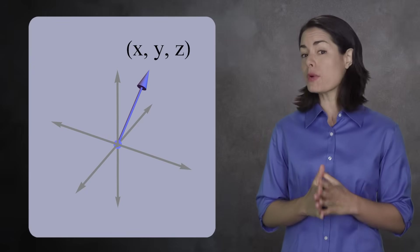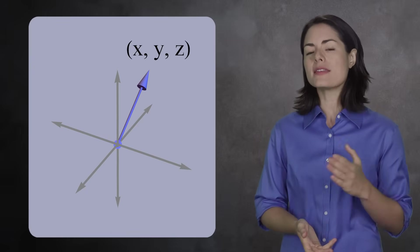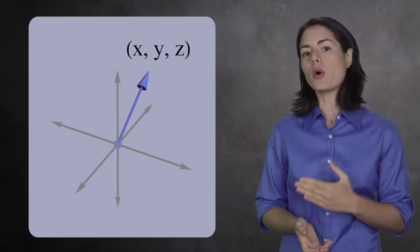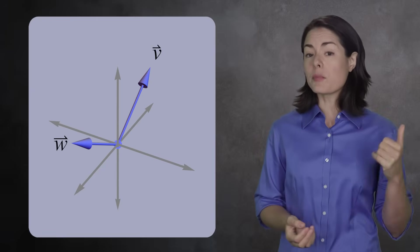Similarly, you can have vectors with three coordinates, an x, y, and z-coordinate. Once again, the tail of the vector is at the origin, and the head is at the point given by the three coordinates.